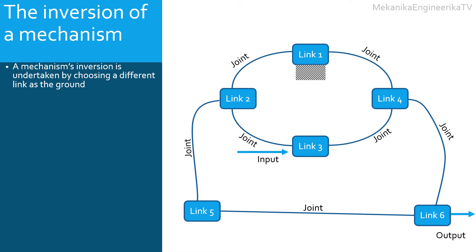In this example, link 1 is the ground. Link 1 is the reference for the kinematics of the mechanism. The inversion of the mechanism is the same mechanism, with the same links, the same kinematic pairs, except that another link is considered as the ground. It is possible, for example, to choose link 2 as the ground. This mechanism is now an inversion of the original mechanism having link 1 as the ground.